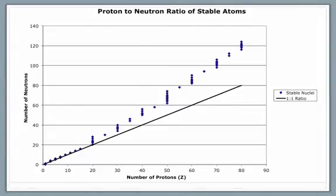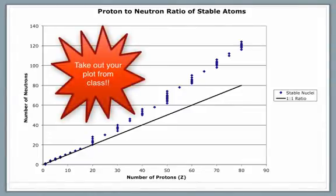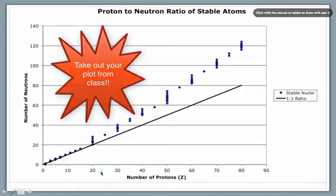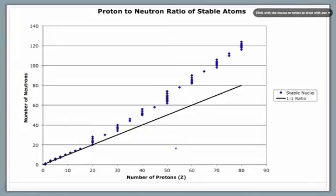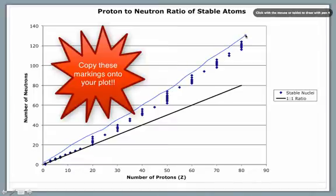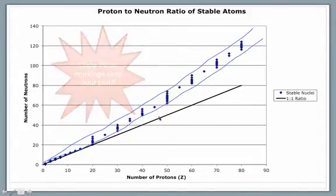To understand how to make these predictions, we're going to get back to our proton-to-neutron ratio plot for stable nuclei. We made this plot from a table of stable isotopes, pulling out the number of protons and neutrons in each stable isotope. We made a big data table and plotted those points. As you can see from the plot, we get a pretty definitive shape to all of our data values, and these data points represent the range of stable proton-to-neutron ratios — atoms where the strong force is approximately equal to the repulsion force. We can label this region as our stable isotopes.